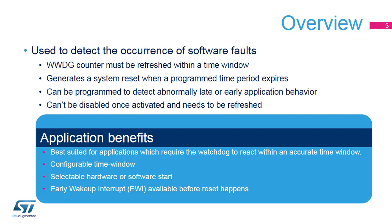The Window Watchdog can be programmed to detect abnormally late or early application behavior. Once enabled, it can only be disabled by a device reset. It is best suited for applications required to react within an accurate timing window. This time window is configurable and can be adjusted according to various use cases. The Window Watchdog can be configured to start either by hardware or software via the option bytes.